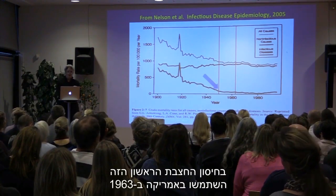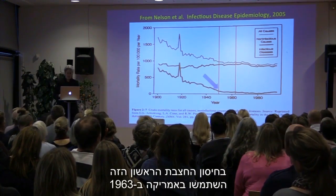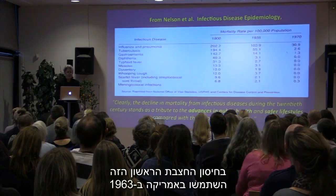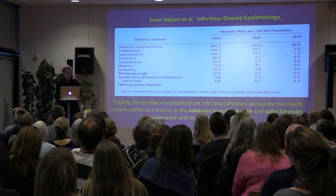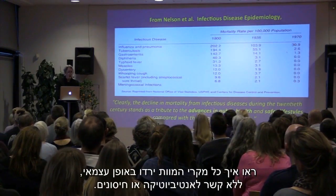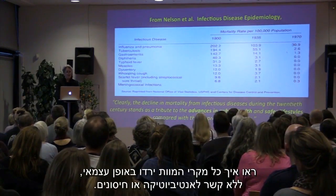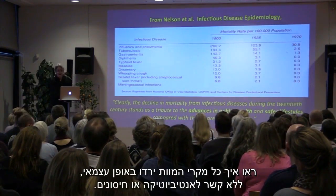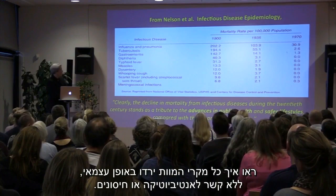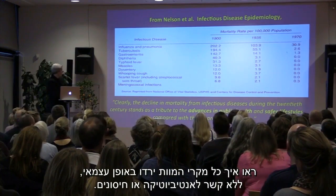That first measles vaccine was used in America in 1963. Look how all deaths decreased independently of antibiotics or vaccines.